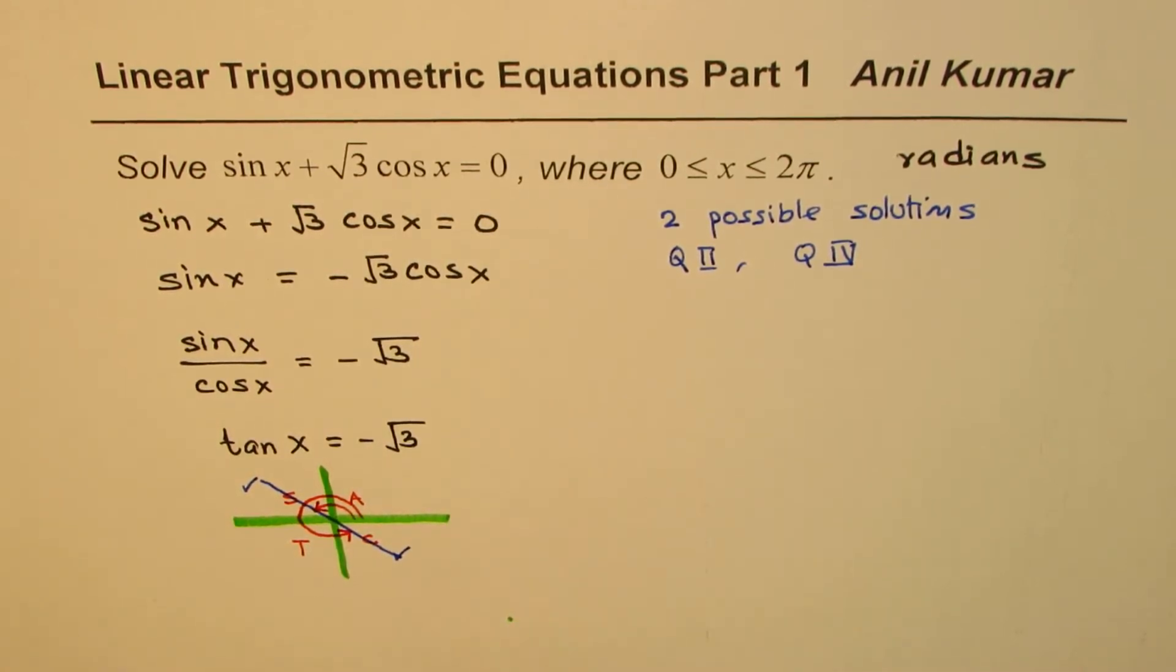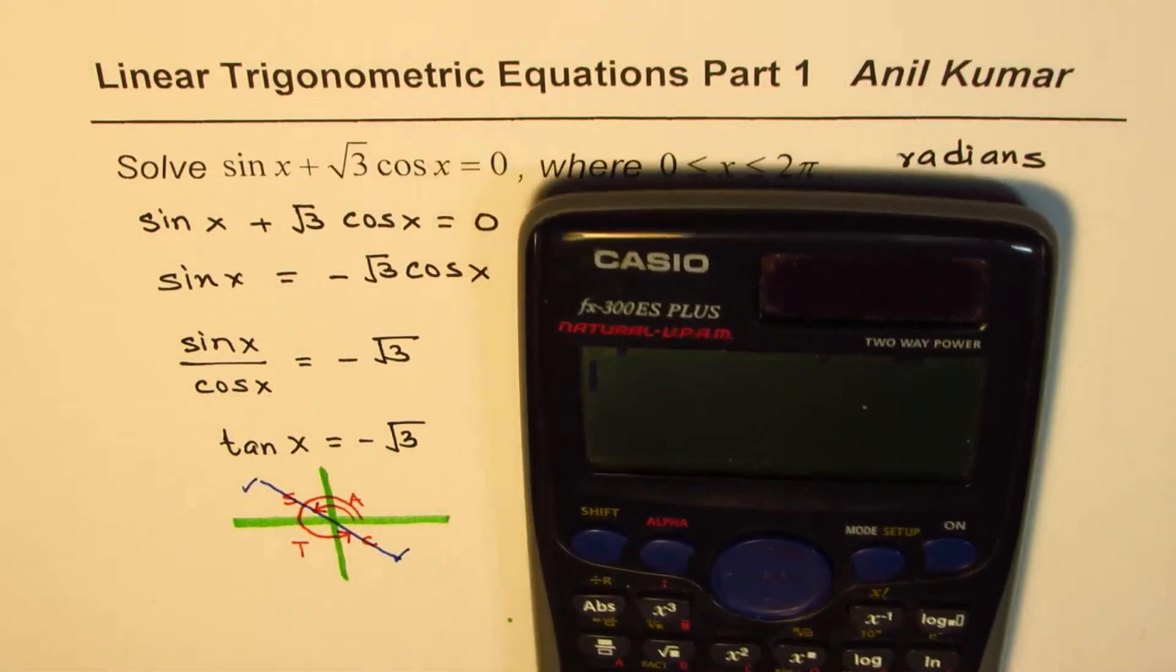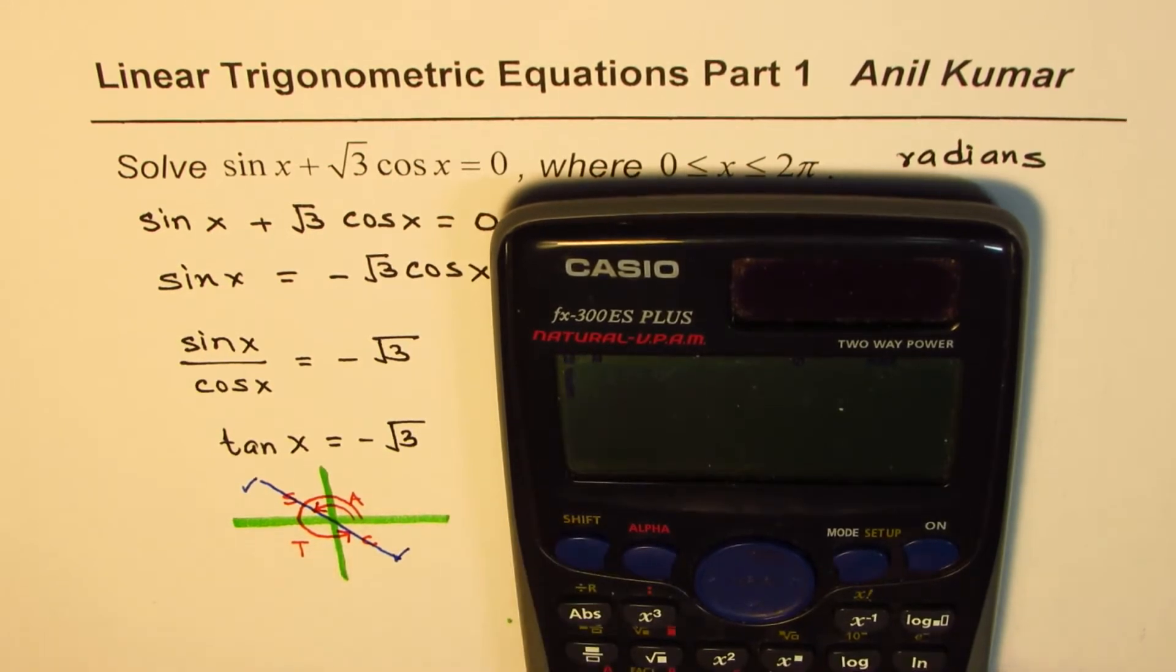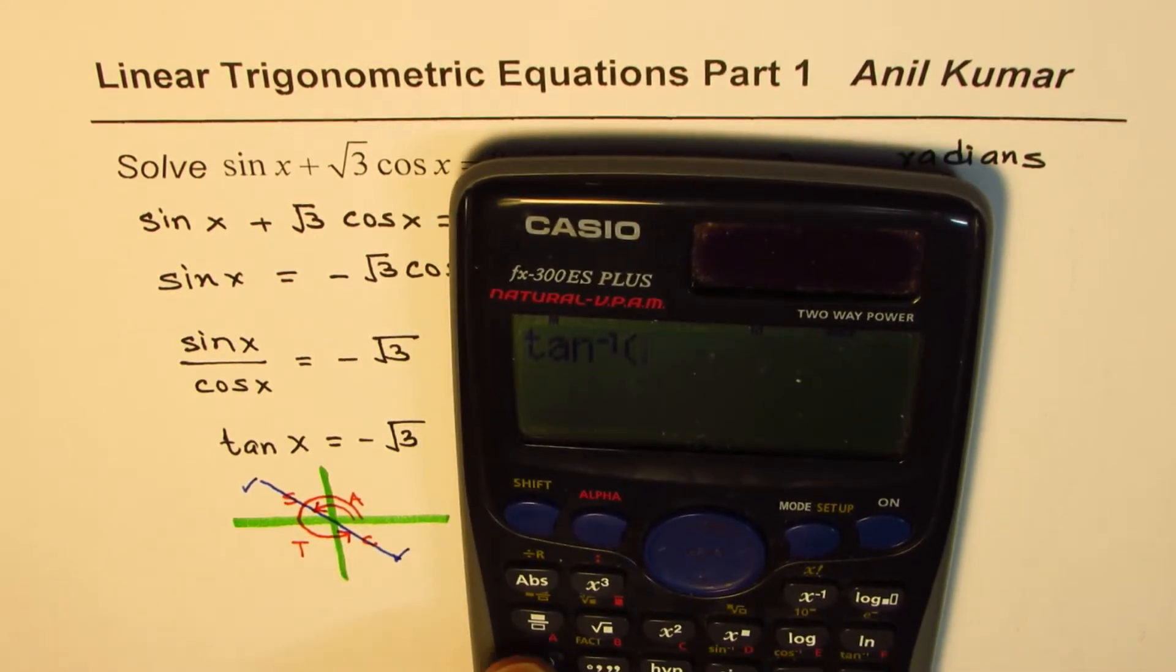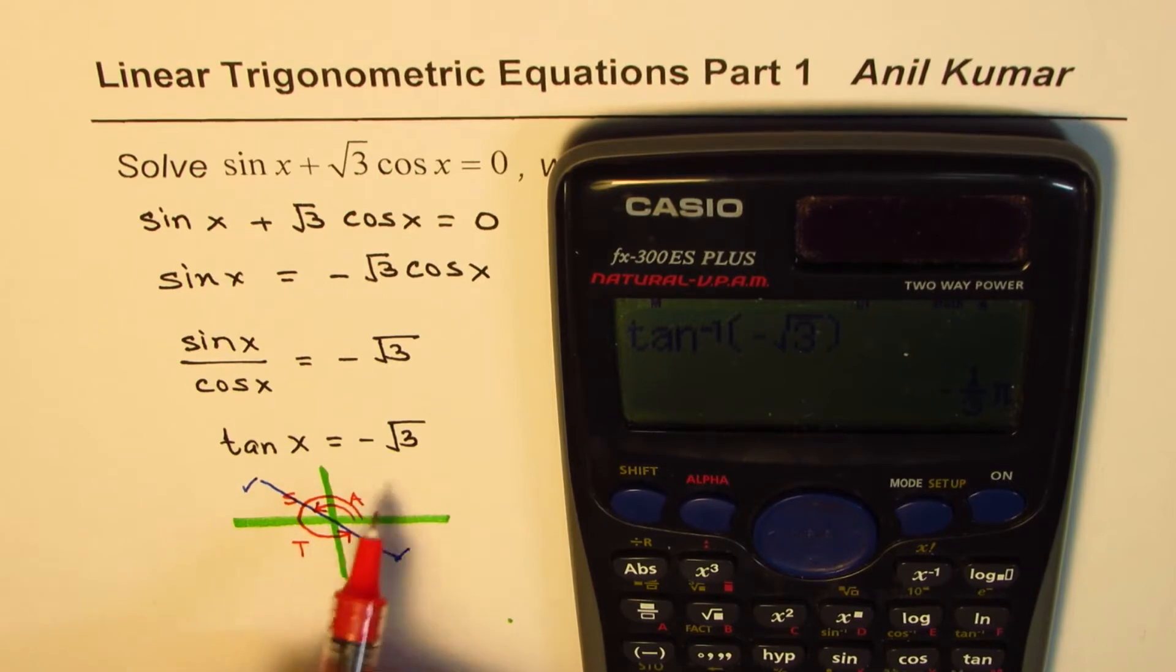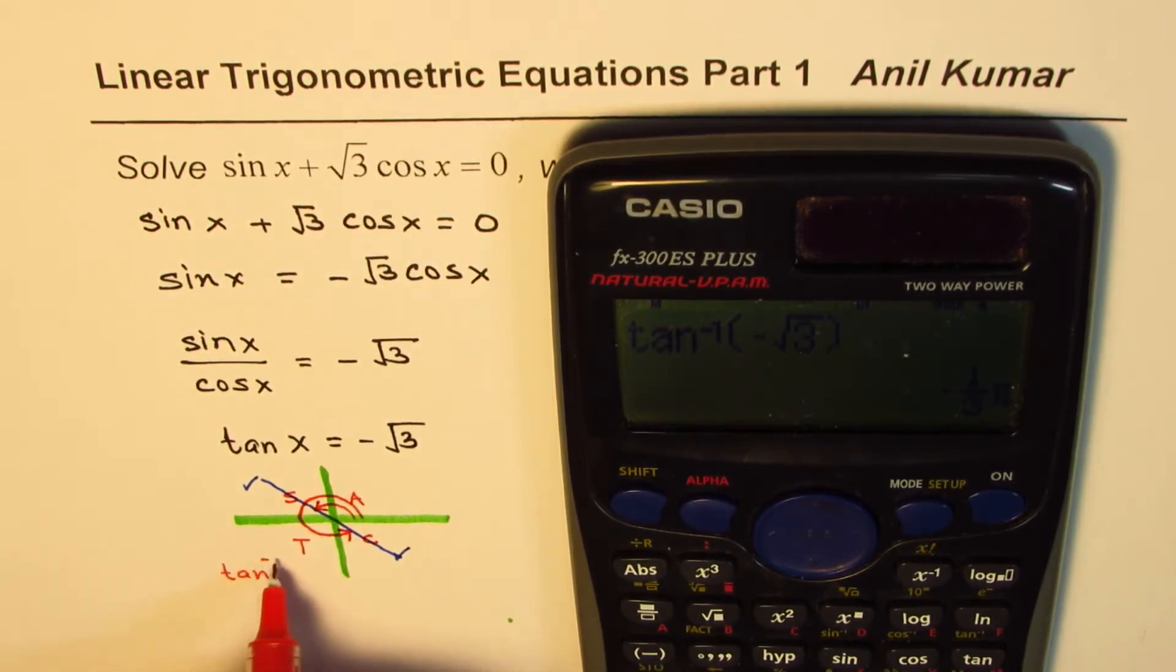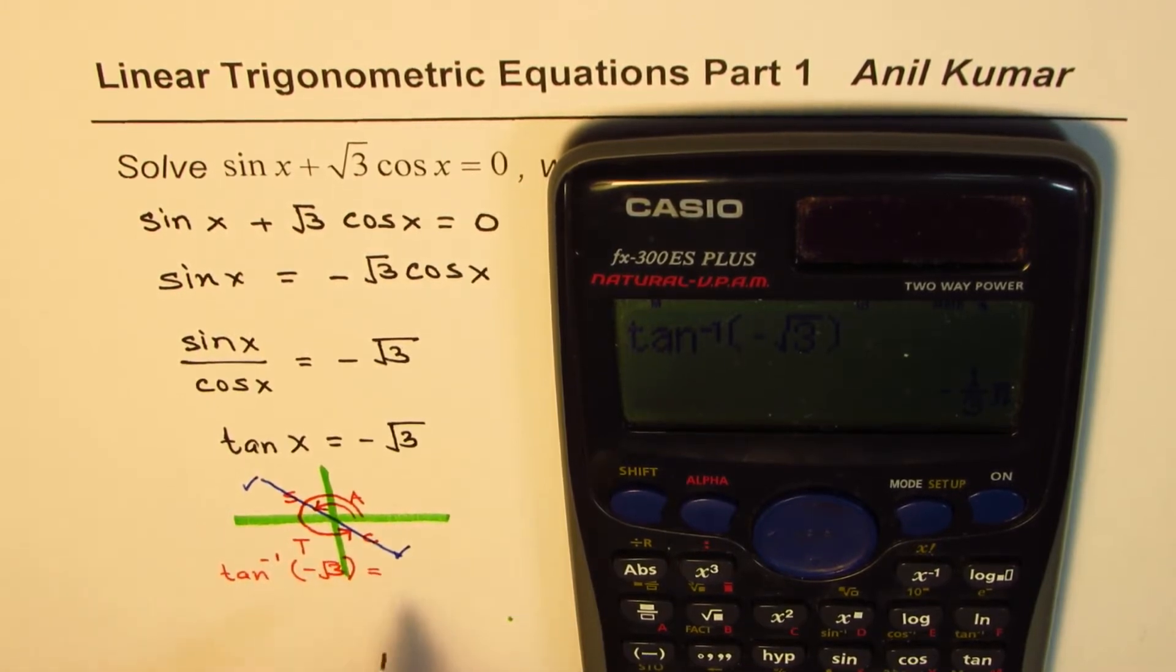Now the idea is, if I use the calculator, I get only one solution. Let me show you. So what we get here is shift tan inverse, and we need to do minus square root 3, bracket close, equal to. We get one solution, and that solution is, we did tan inverse minus square root 3.